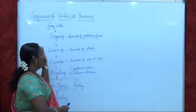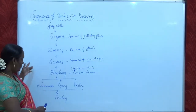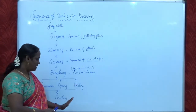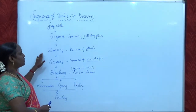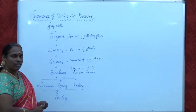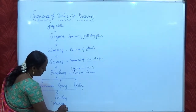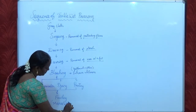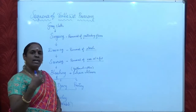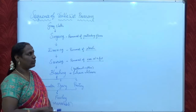The process flow to convert the gray cloth into a marketable product involves: singeing, desizing, scouring, bleaching, mercerization, dyeing, printing, and finishing. These processes are carried out to enhance the surface character and also to enhance the aesthetic appearance of the gray cloth.